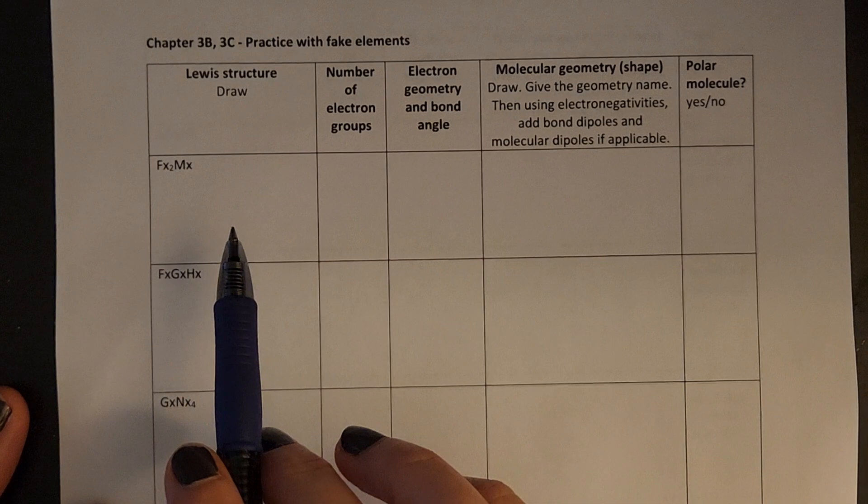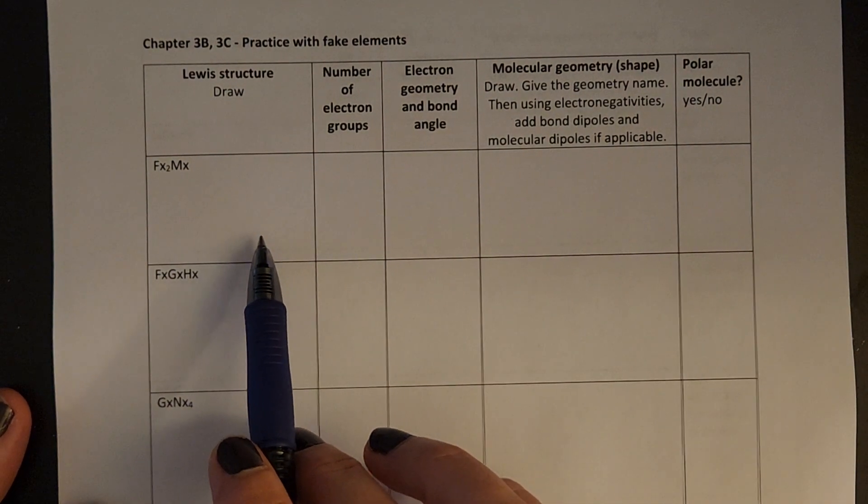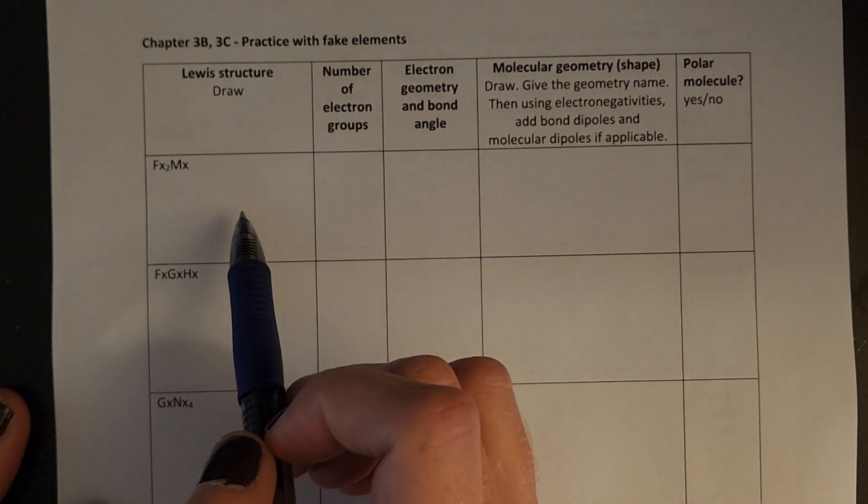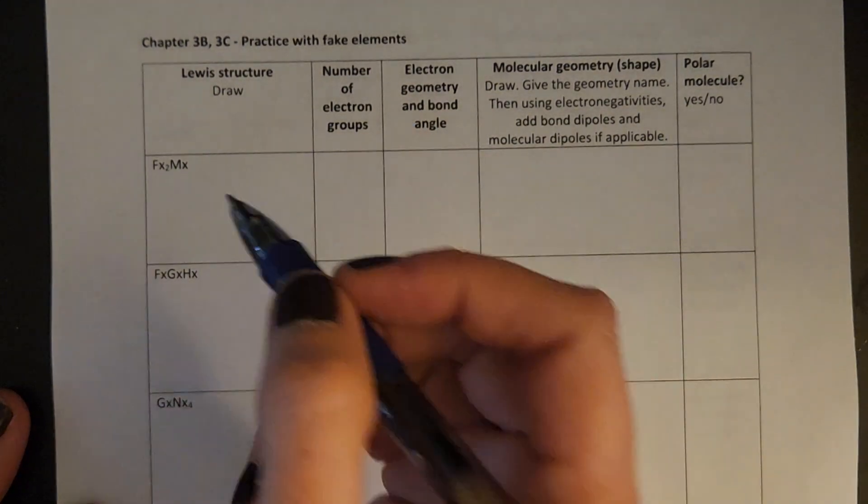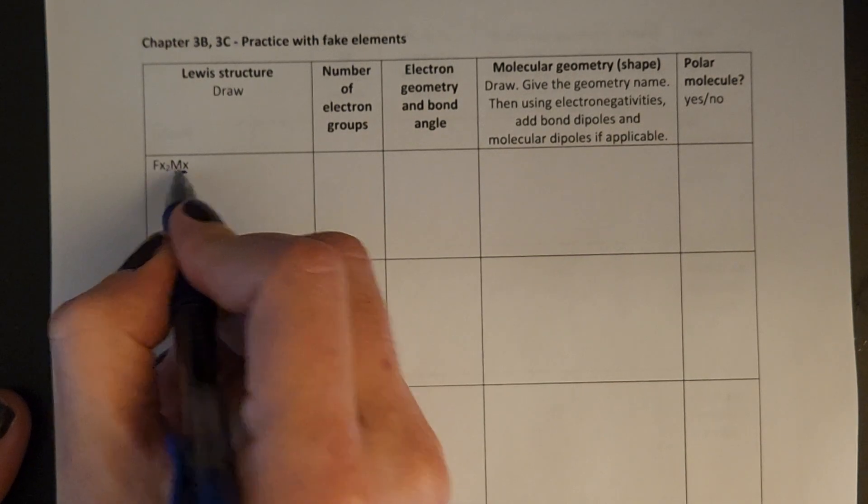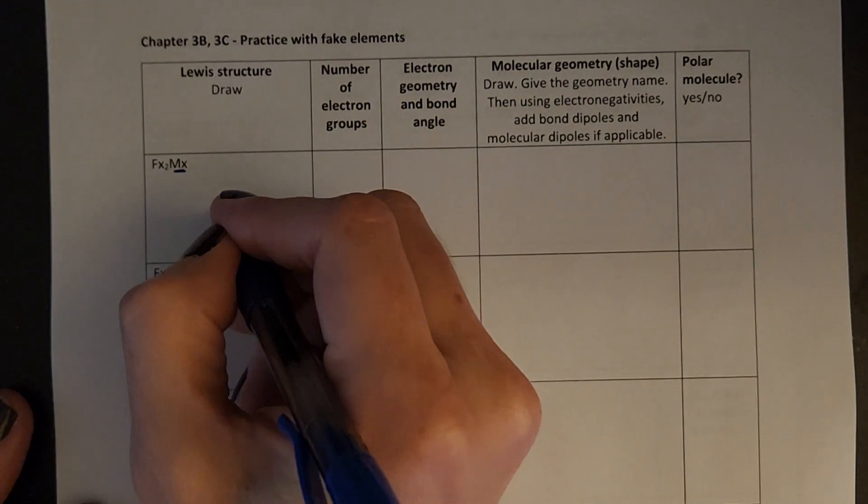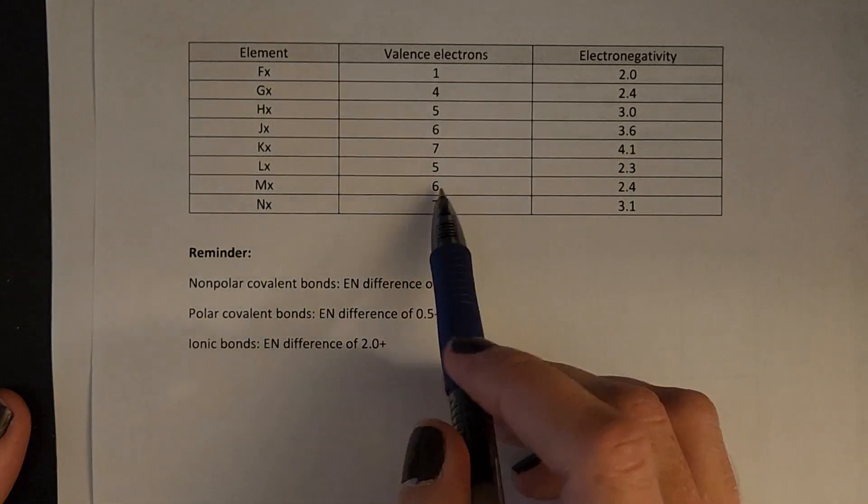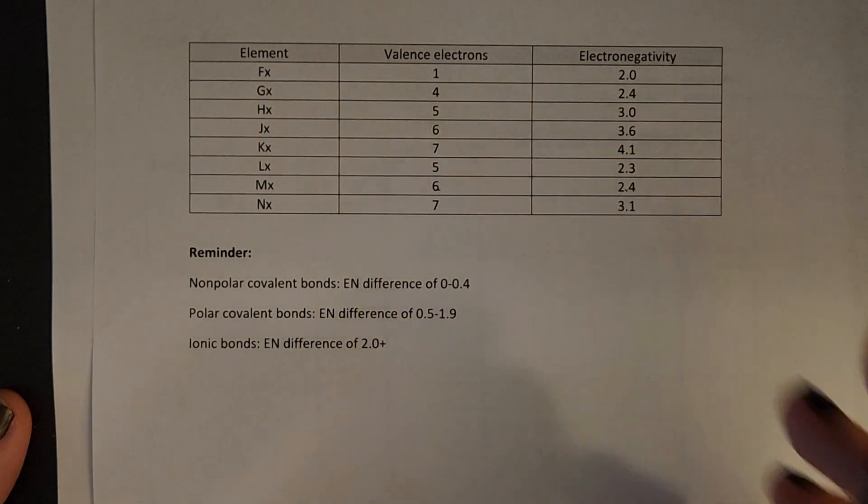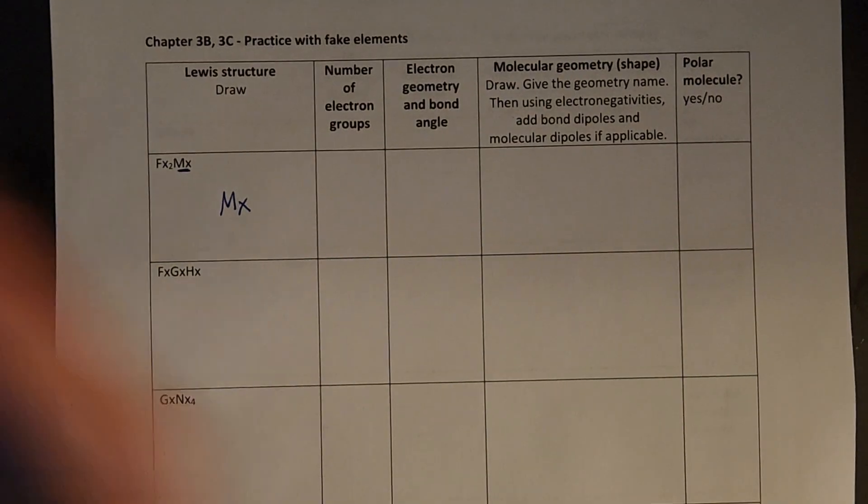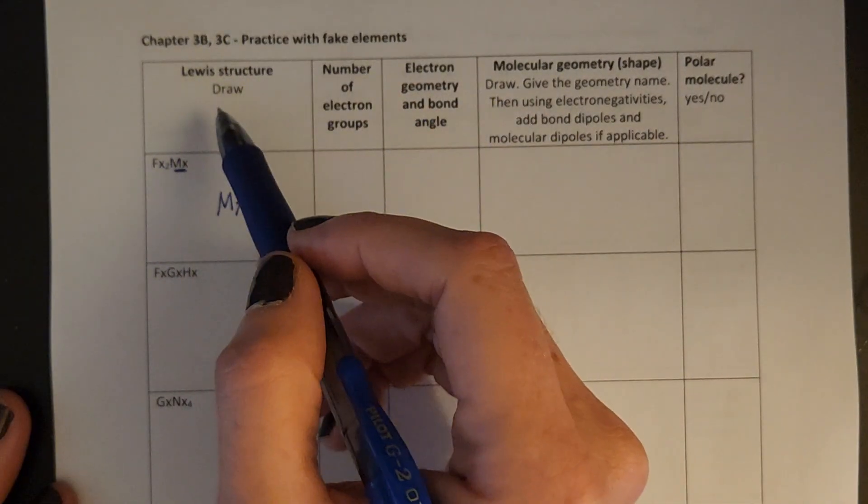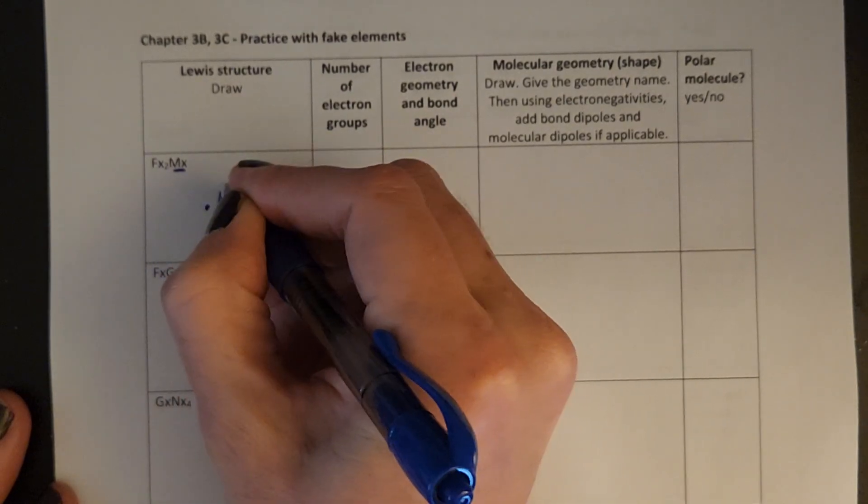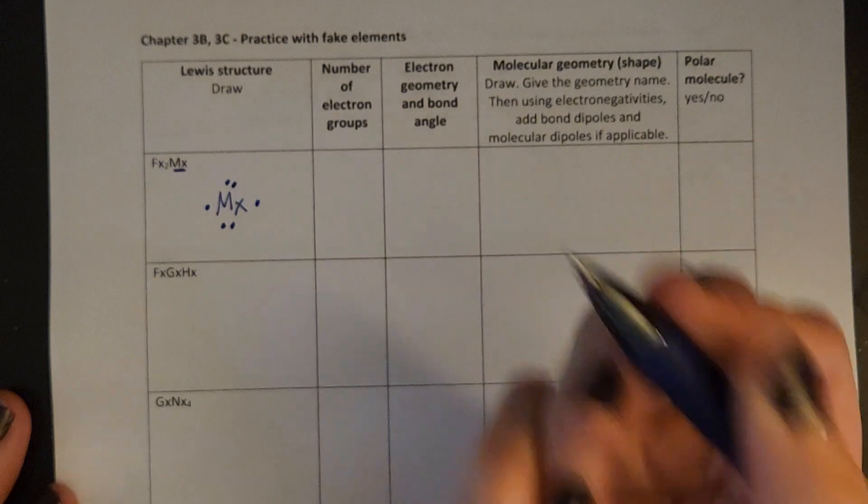I'm going to work one or two of these for you just so you can get an idea of how to work these fake element problems. So first we always want to be able to draw the Lewis structure. I have fx2mx and mx is going to be our center atom. I will bold the centers for you or tell you. So mx has six valence electrons and an electronegativity of 2.4. I don't actually need electronegativities very often in the Lewis structures, but I'm going to do one, two, three, four, five, six valence electrons.